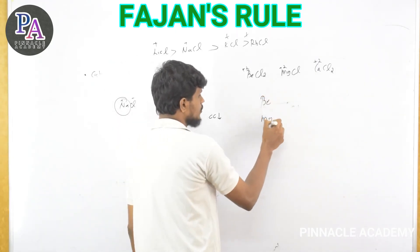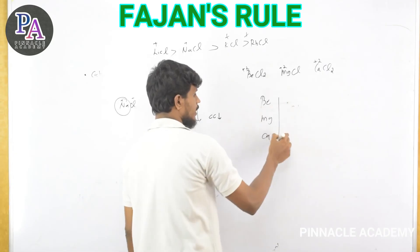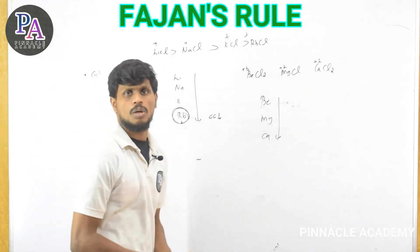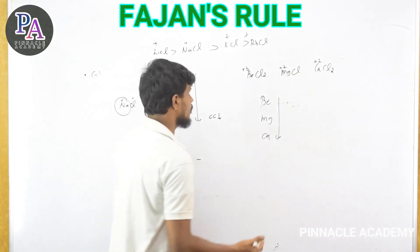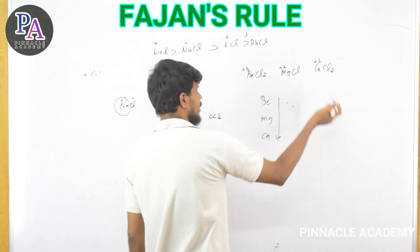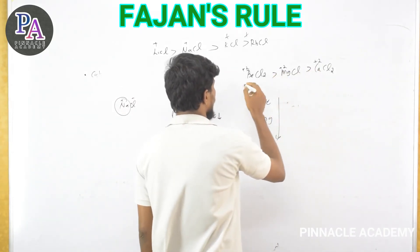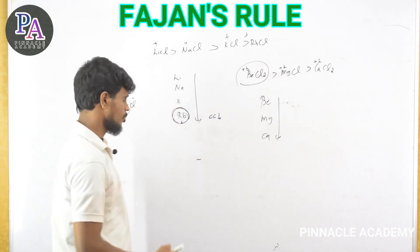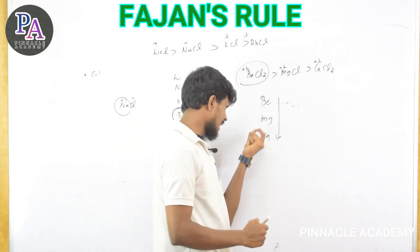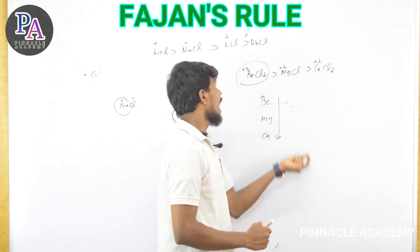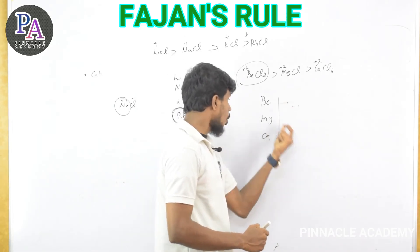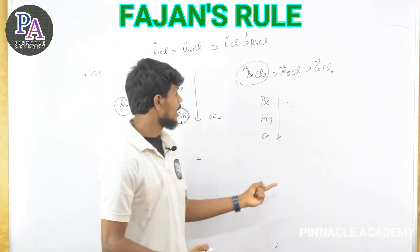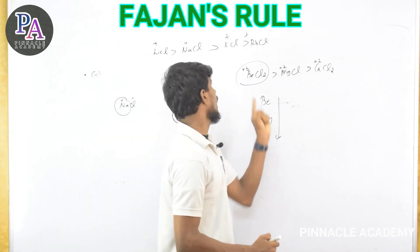Consider magnesium. The covalent character comparison shows: BeCl₂ > MgCl₂ > CaCl₂. Covalent character is ranked accordingly. The calcium size value is larger, so its covalent character is less. The ranking of covalent character follows the order 1, 2, 3 corresponding to Be, Mg, Ca chlorides.